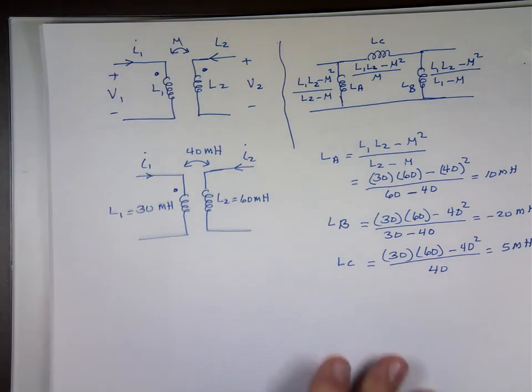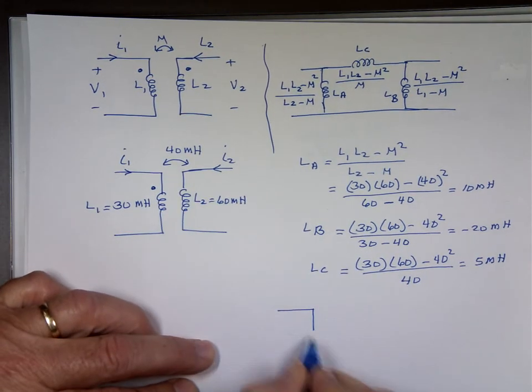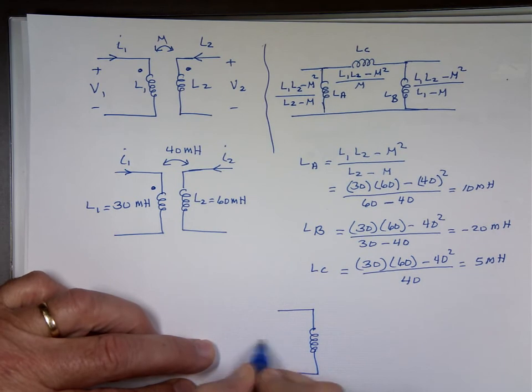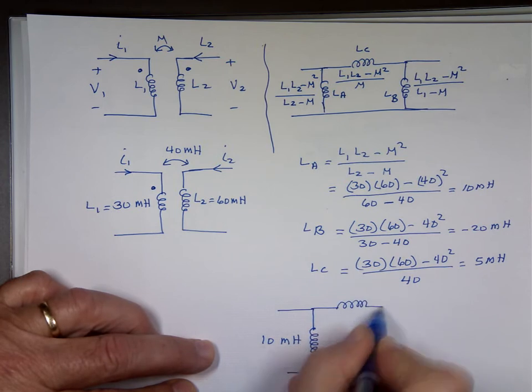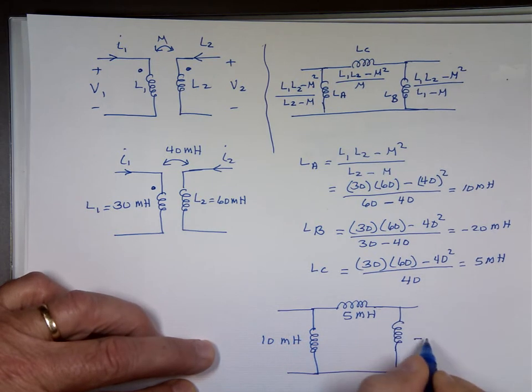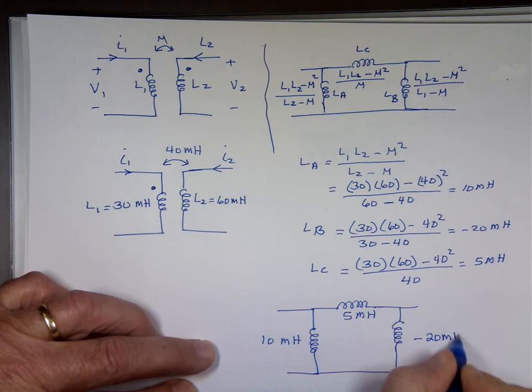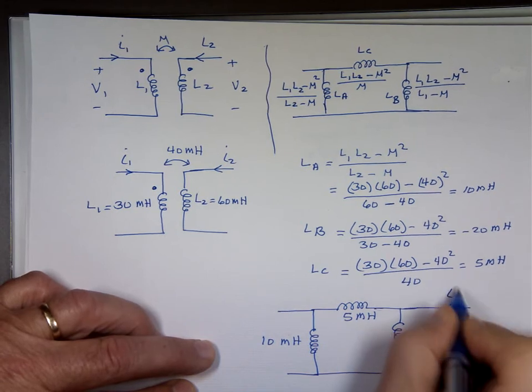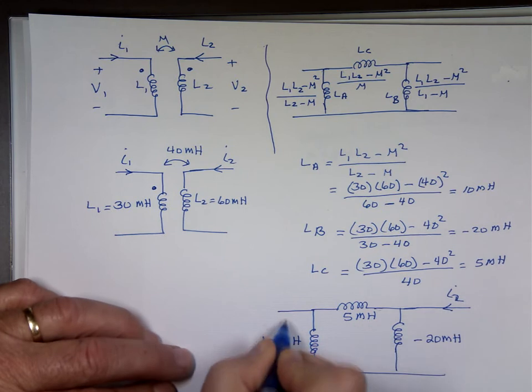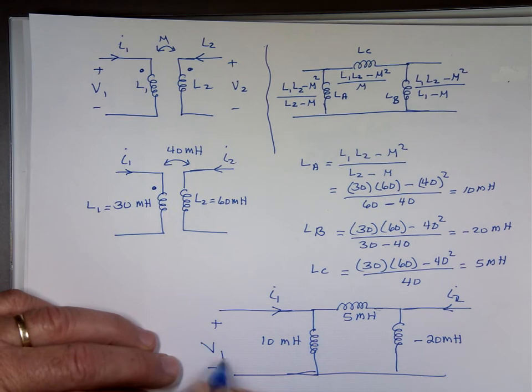So if you want to find the pi equivalent of this one, you're going to replace it with an inductor of the value of 10 millihenry, another one of 5 millihenry, and one here of negative 20 millihenry. This is your I sub 2 coming in, this is your I sub 1 going in. This is still V1, this is still V2.